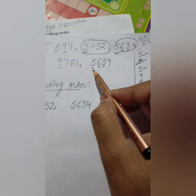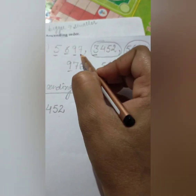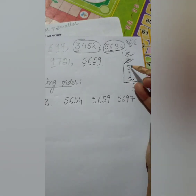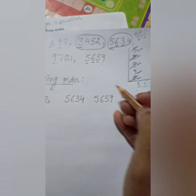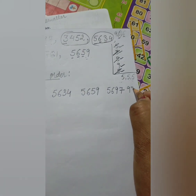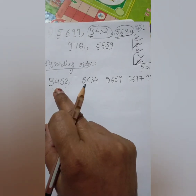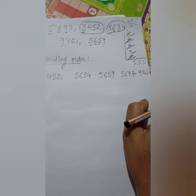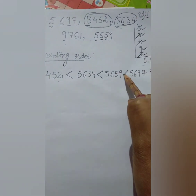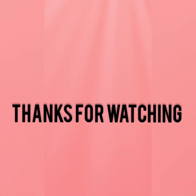After 5634, the next number starting with 5 is 5659, and then 5697. After all the numbers starting with 5, the number starting with 9 comes last — that is 9761. So the ascending order is: 3452, 5634, 5659, 5697, 9761 — from the smallest to the greatest. This completes the ascending order.